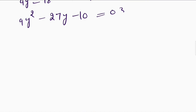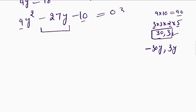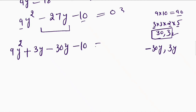Now let's find the roots of this quadratic equation. I will use the midterm split method. 9 into 10 is 90. The factors of 90 are 3 times 3 times 2 times 5. Rearranging, I get 30 and 3. So I will split negative 27 as negative 30y and positive 3y. Putting this in, I get 9y square minus 30y plus 3y minus 10 is equal to 0. If I add these two middle terms I get negative 27, which checks out.